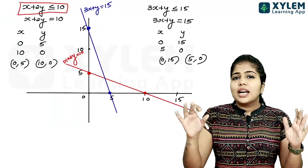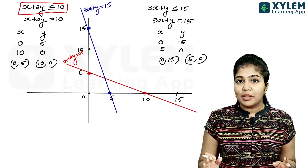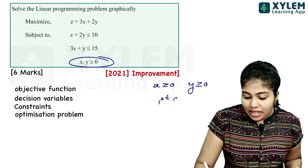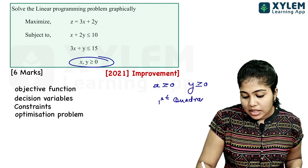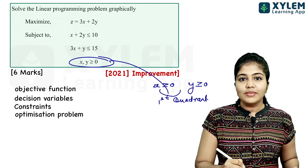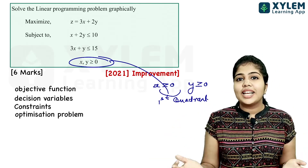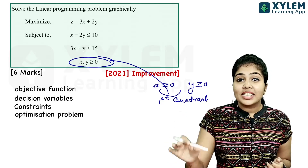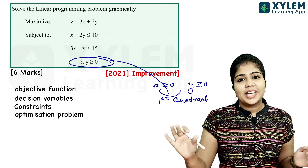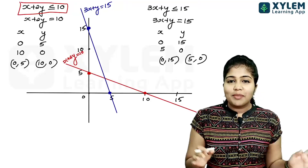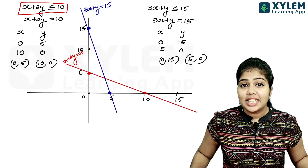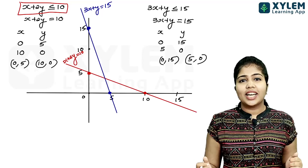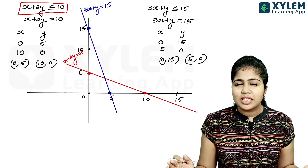This is our feasible region, in the first quadrant. This is a graphical solution to the inequality. We will identify the whole region and try to find the common region by solving the two equations.